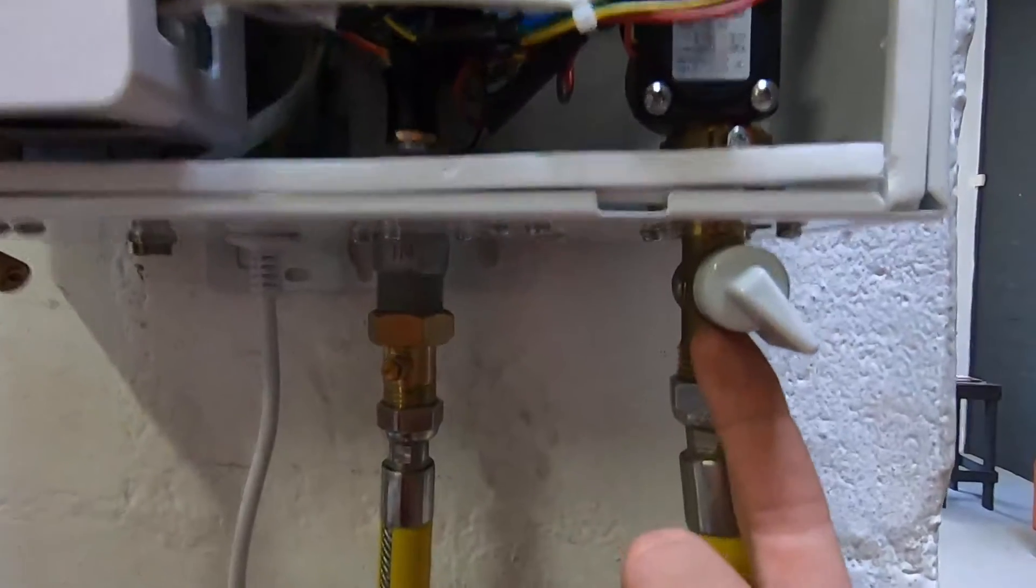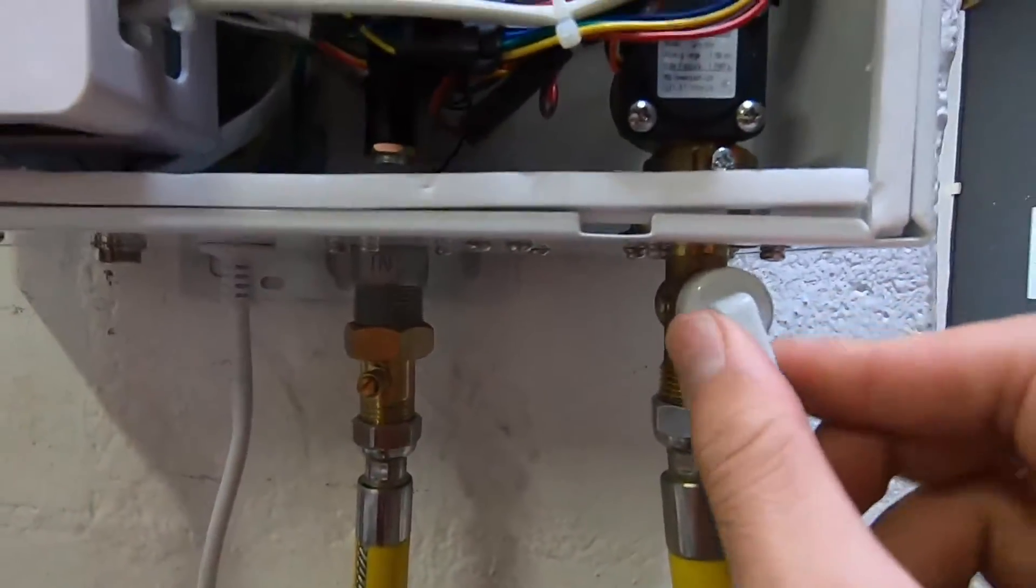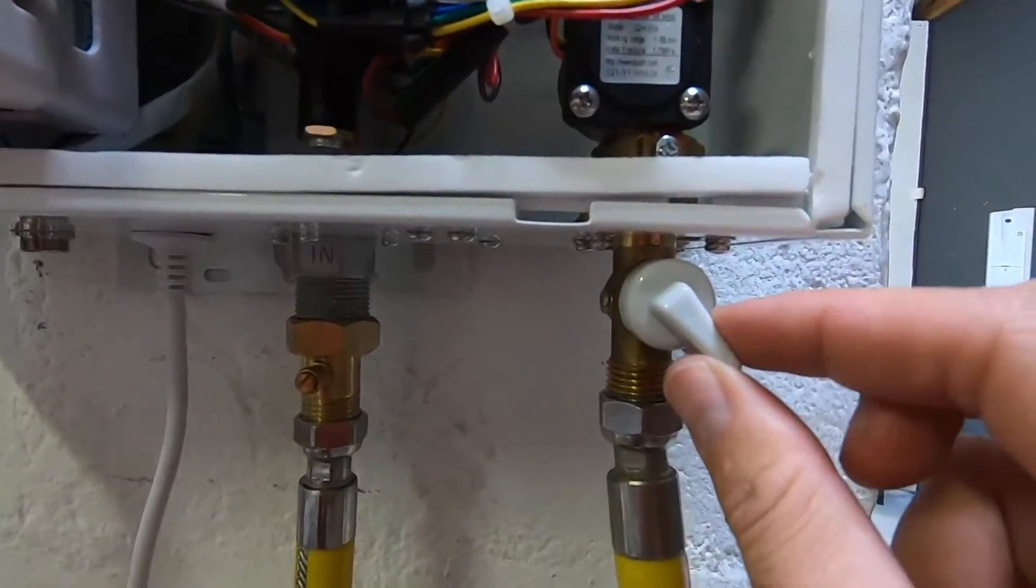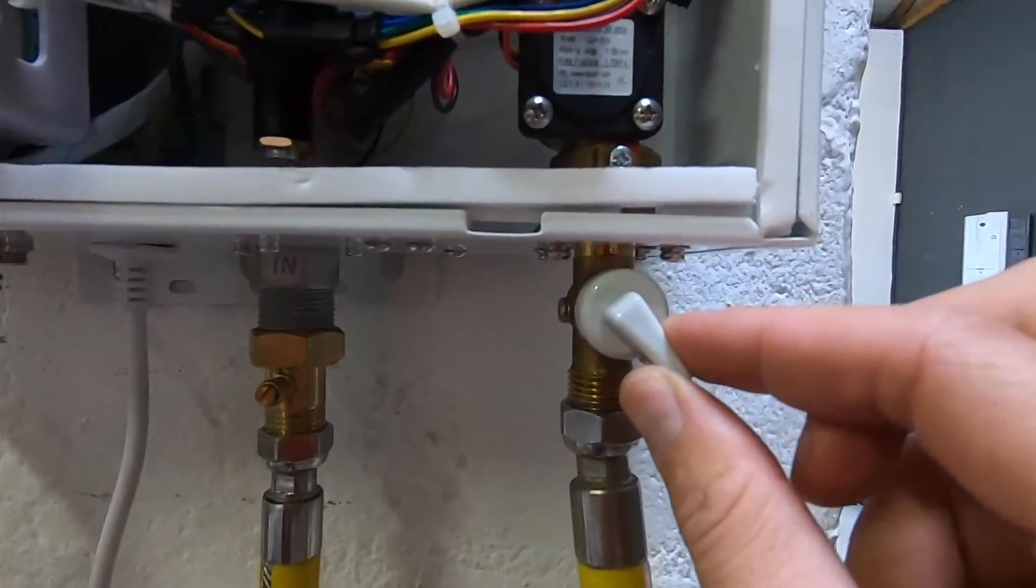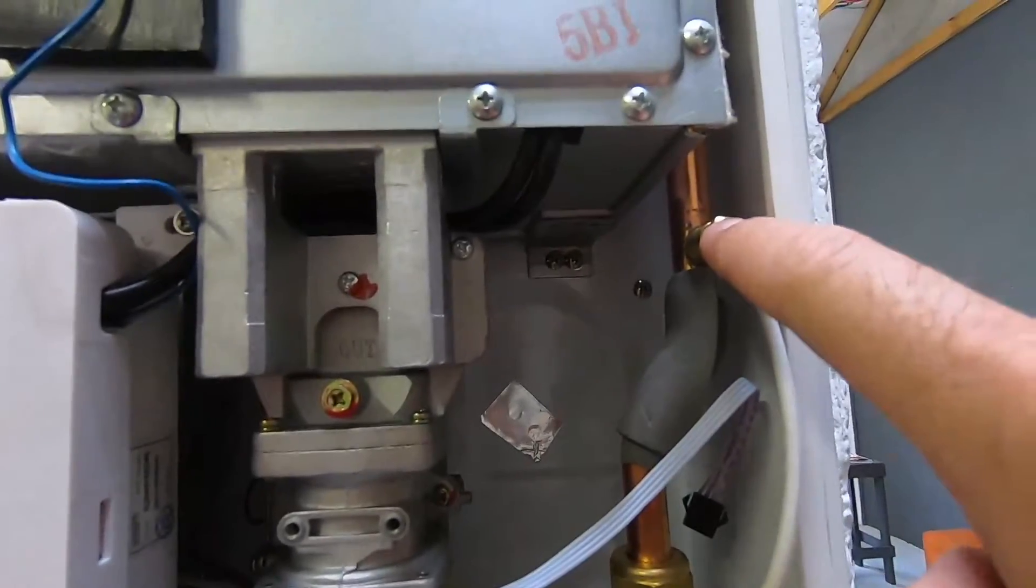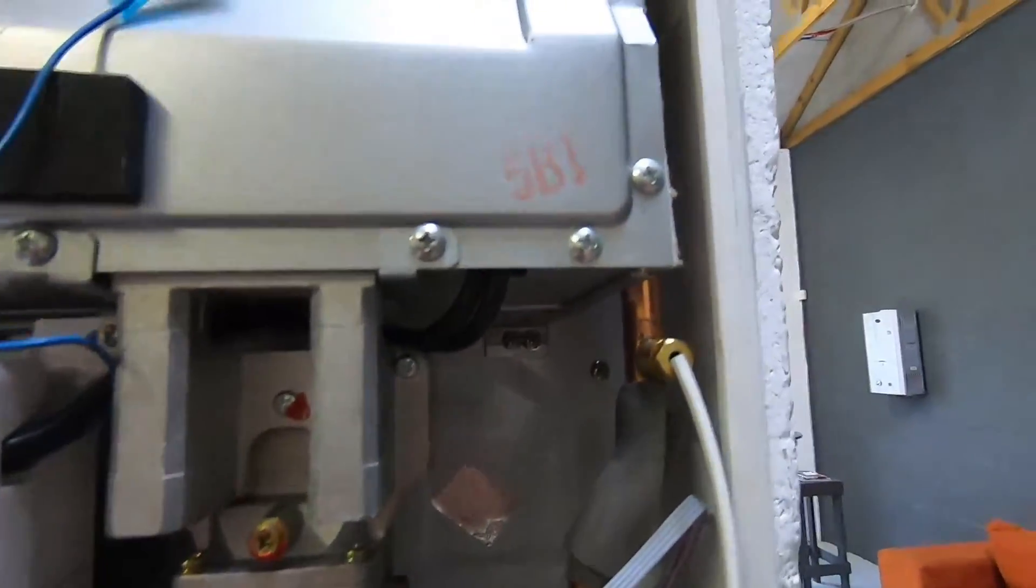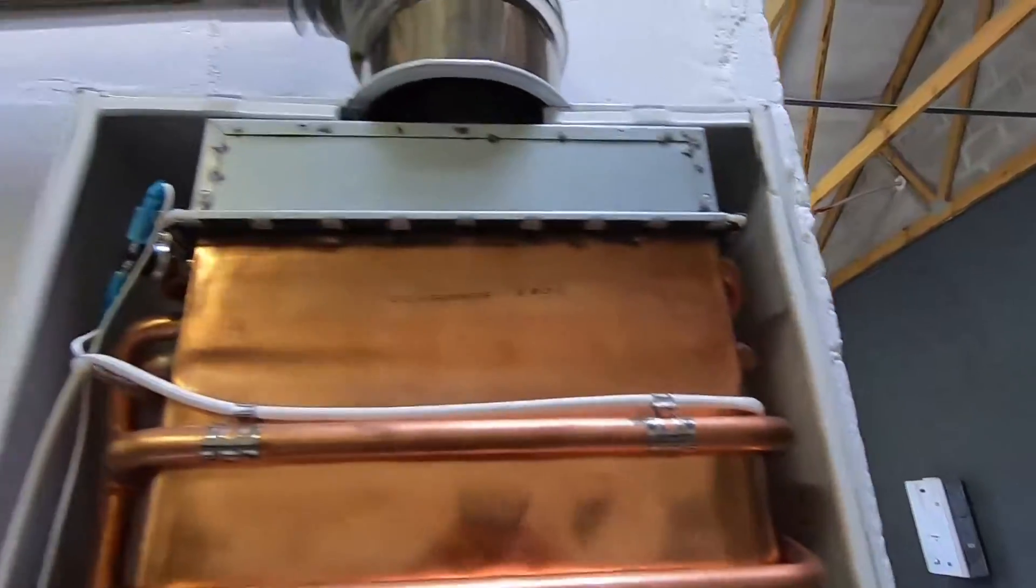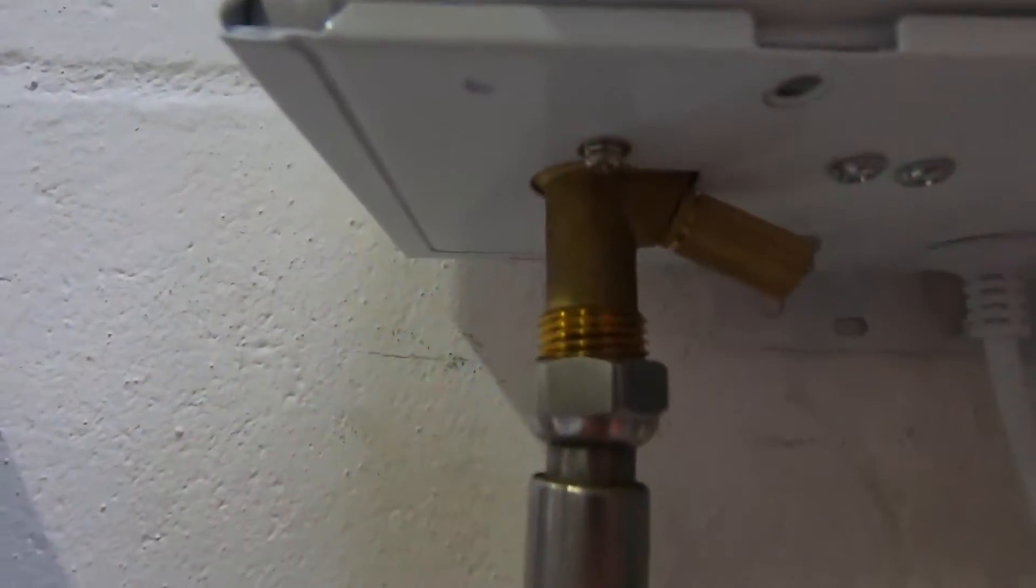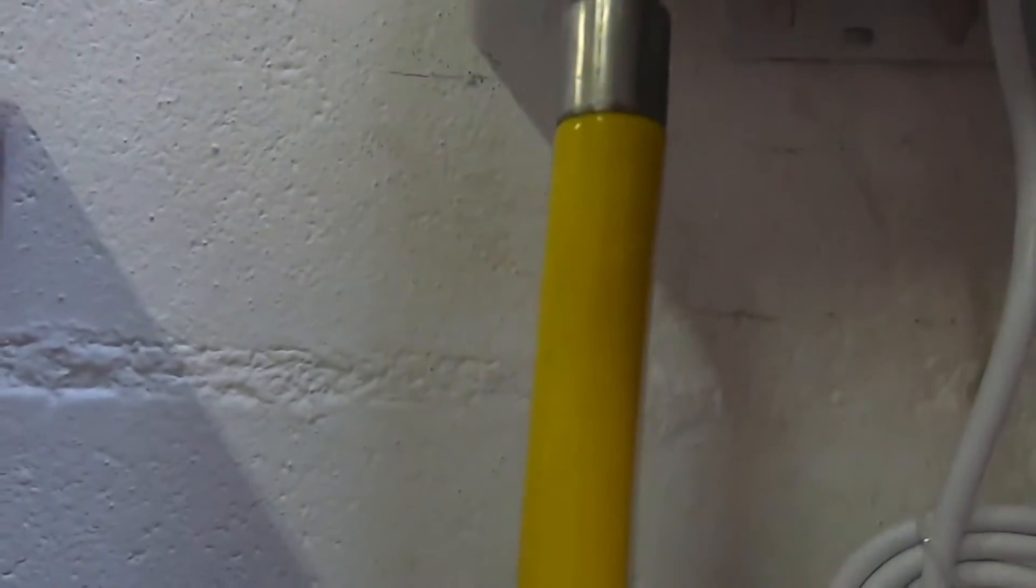The water travels up and into the water flow valve where the flow can be adjusted. The recommended setting is to have the flow on maximum. It then passes through the water flow sensor located here and past the inlet temperature sensor located there. It then travels up and through the radiator and past the outlet temperature sensor located inside there. It then travels past the over pressurization valve and out the outlet of the geyser.